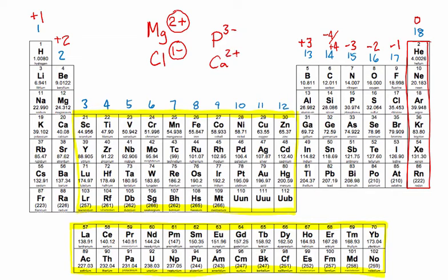And finally, if I asked you the charge that iron usually forms, you would tell me, we don't really know what charge iron forms because it is not a representative element. Sometimes iron forms a 2+ ion, and sometimes it forms a 3+ ion.